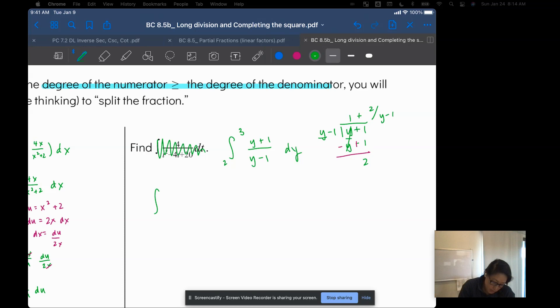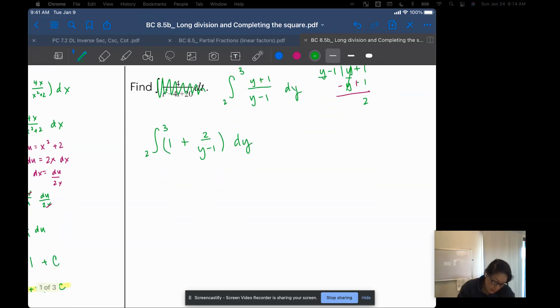So I have the integral from 2 to 3 of 1 plus 2 over y minus 1 dy. Next up, I'm going to go ahead and integrate. So I get y plus, right here, I have the ln of the denominator.